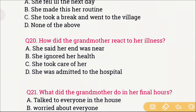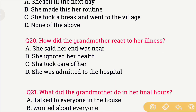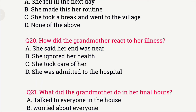Question number 20: How did the grandmother react to her illness? When the grandmother fell ill, how did she react to her fever? The options are: A) She said her end was near, B) She ignored her health, C) She took care of herself, and D) She was admitted to the hospital. The right answer is option A — she said her end was near, meaning she felt that death was very close.